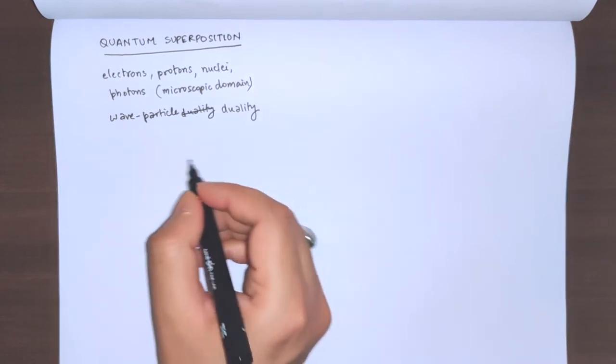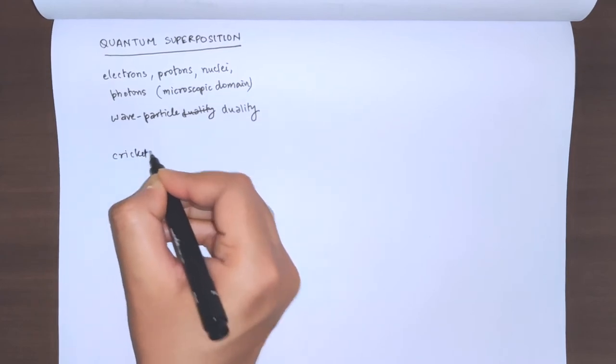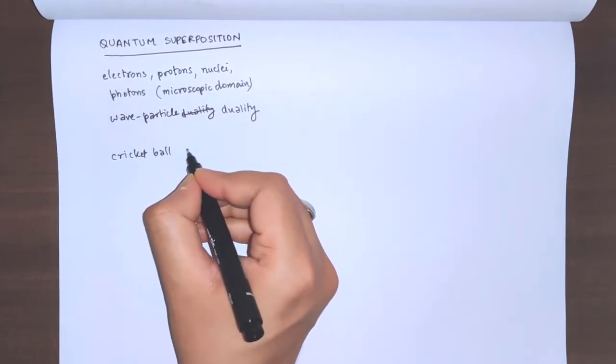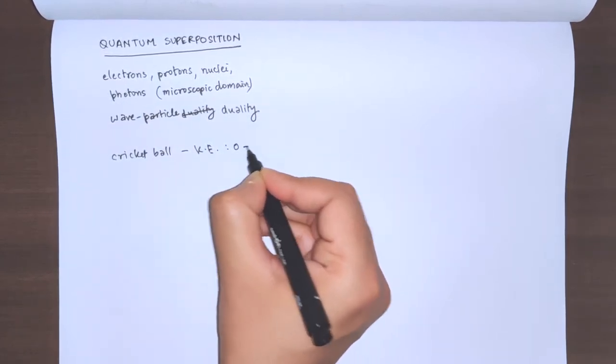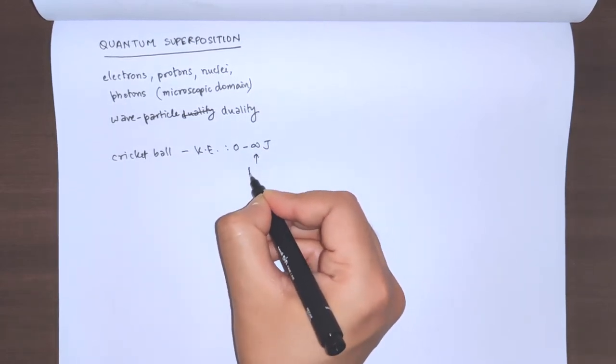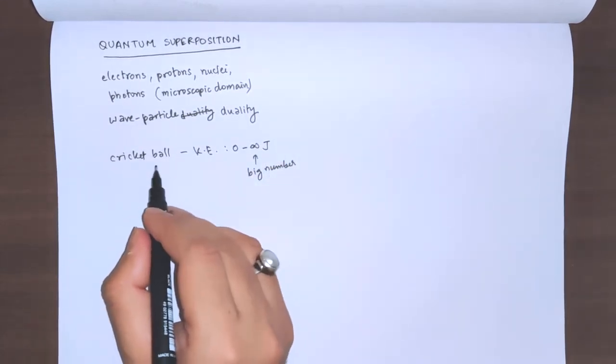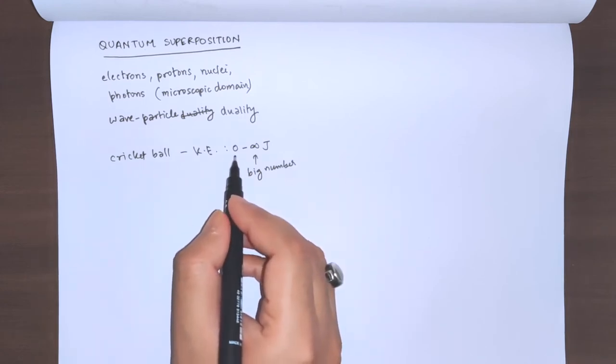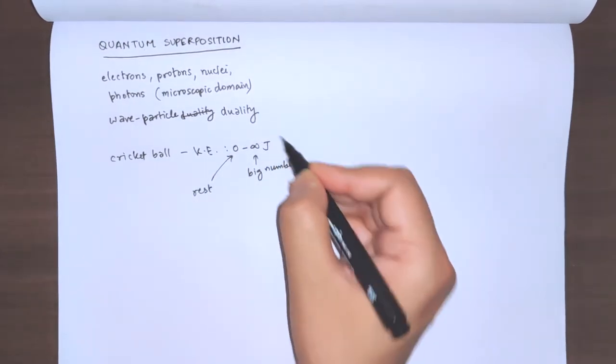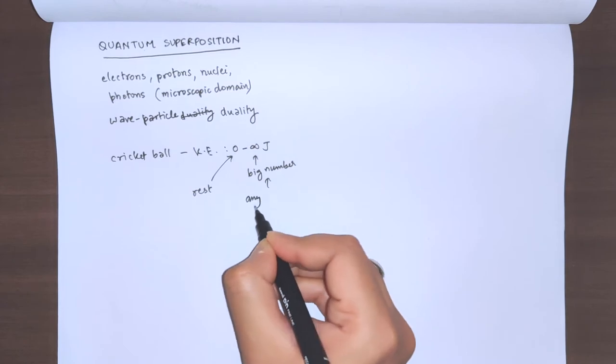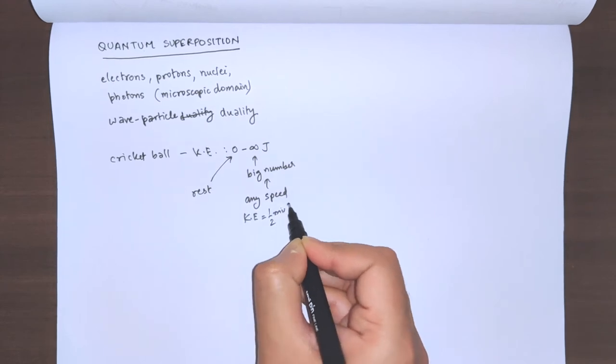For example, if you take a classical object or a macroscopic object like a cricket ball, its energy is continuous. It can have kinetic energy ranging from zero to infinity joules - any big number. There is no restriction on what energy is allowed for this ball. This represents rest, and it can be thrown at any speed. KE equals half mv squared.